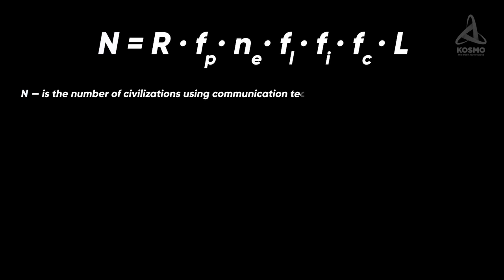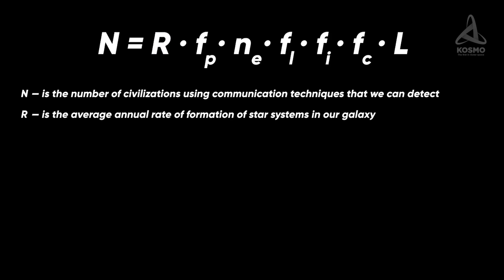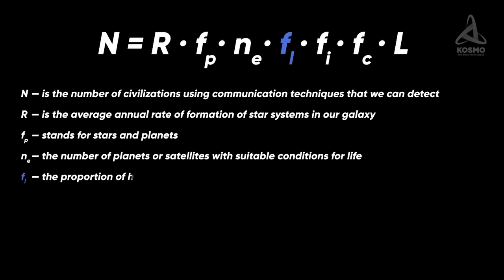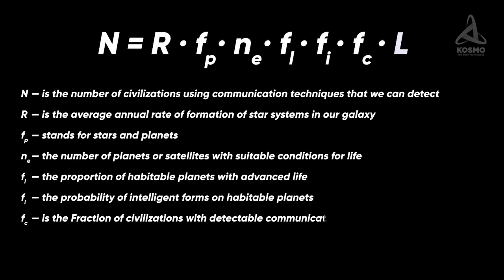N. This is the number of civilizations which use communication methods that we could detect. R is the average annual rate of emergence of stellar systems in our galaxy. F sub P is stars that have planets. N sub E is the number of planets or satellites that can potentially support life. F sub L is the number of inhabited planets that develop life. F sub I is the probability of the emergence of intelligent life on inhabited planets. F sub C is the fraction of civilizations with detectable forms of communication. L is the time length of a detectable signal. Many astrophysicists have tried to calculate each of the presented values, but to this day, the Drake equation has no final solution.